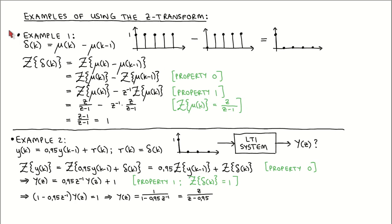On this page, we look at two examples of calculating the Z-Transform of signals. For the first example, we calculate the Z-Transform of an impulse. Although we can read the answer from the Z-Transform tables, we can use the Z-Transform of the unit step and Z-Transform properties to get the same result. We can describe the impulse as a unit step minus a unit step delayed by one time step. We can plot the unit step and a time-delayed unit step, and if we subtract the latter from the former, it becomes clear that we get an impulse.